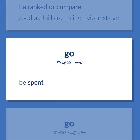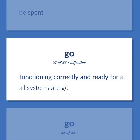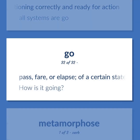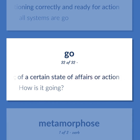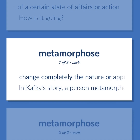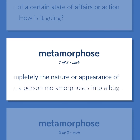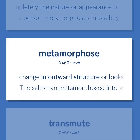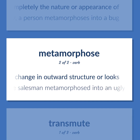Be spent. Functioning correctly and ready for action. All systems are go. Pass, fare, or elapse of a certain state of affairs or action. How is it going? Change completely the nature or appearance of. In Kafka's story, a person metamorphoses into a bug. Change in outward structure or looks. The salesman metamorphosed into an ugly beetle.